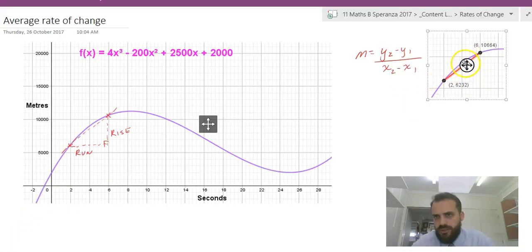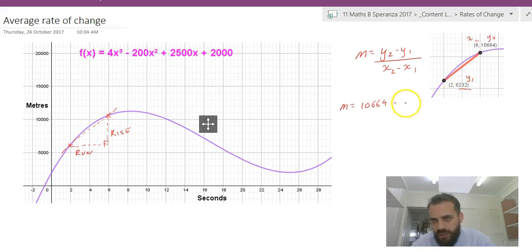So here's our screenshot. m equals y2, let's call this y2, that will make this x2. So y2 is 10,664 minus y1, this y value is y1, 6,232, all over x2, which is 6, minus x1, which is 2. Put it in your calculator and get an answer. And it's 1,108.